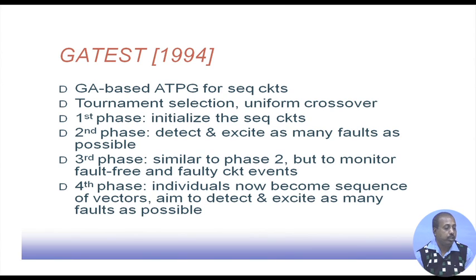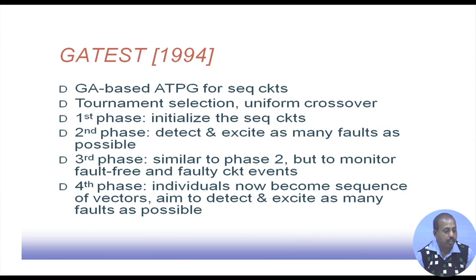The third phase monitors fault-free and faulty circuit events — how many new faults are being detected, and the difference between fault-free operation and faulty circuit operation becomes the cost function. In the fourth phase, for sequential circuits we need to apply a sequence of vectors. The individuals become sequences of vectors, and for a particular sequence, the faults it can detect and excite form the fitness function. The fourth phase performs the sequential ATPG, while the previous stages are similar to combinational ATPG.